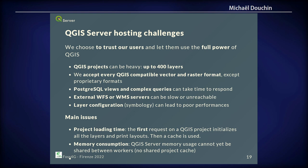The main issues we encountered were project loading time. Imagine when you have a complex project in QGIS Desktop — sometimes you wait 20 seconds or a minute for the project to load. It's exactly the same for QGIS Server; the server computer may be slightly faster than a laptop, but it uses the same solutions. Memory consumption can also be a problem for heavy projects. Additionally, different QGIS Server workers used to parallelize requests cannot share the same cache, which can multiply memory consumption.